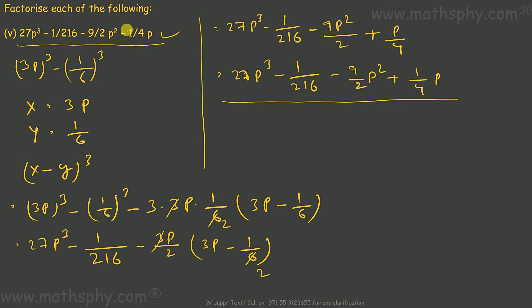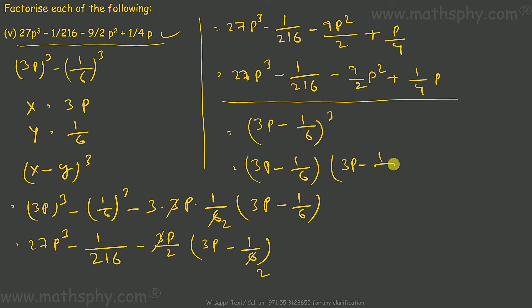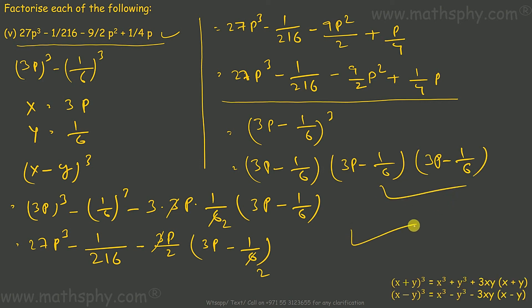This can be written as 3b minus 1 over 6 whole cube. All done.